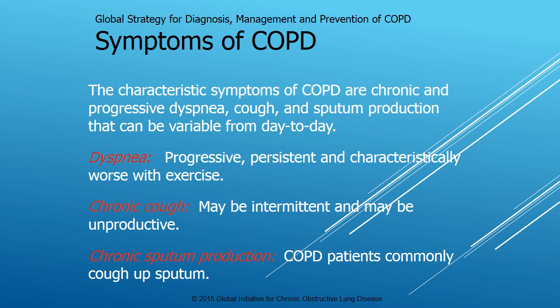The characteristic symptoms of COPD are chronic and progressive dyspnea, cough, and sputum production. These can be variable day to day, but unlike asthma it doesn't go away for a year and resurface — it's always present. Dyspnea is progressive and persistent, and characteristically worse with exercise. A chronic cough may be intermittent and unproductive, but COPD patients commonly cough up sputum. Most of the time a chronic cough in COPD will be productive, but don't rule out COPD just because the cough isn't productive.